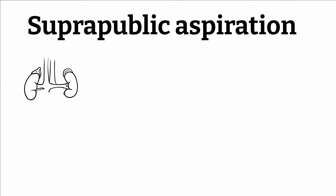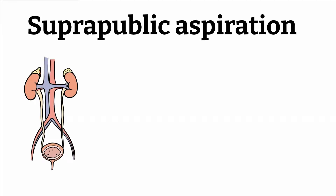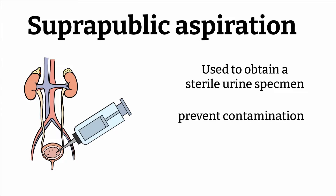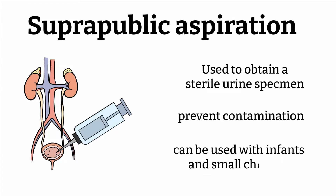Suprapubic aspiration is another method used to obtain a sterile urine specimen. It can be used in place of the catheter if only one specimen is needed. This method is done by inserting a needle directly into the bladder to collect the urine sample. Benefits include avoiding contamination from vaginal and urethral sources, and it can also be used to obtain urine from infants and small children.